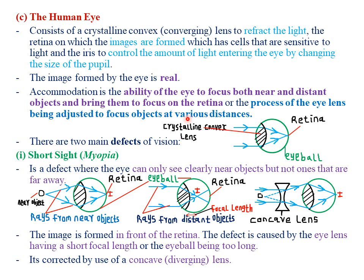There are two main defects of vision. The first defect is called short sight, or short-sightedness, also called myopia. A person suffering from short-sightedness is said to be myopic. Short-sightedness is a defect where the eye can only see clearly near objects but not ones that are far away. Objects closer to you, you'll be able to see clearly, but objects far away you won't be able to see. As shown in this diagram, rays from near objects are focused on the retina, so you see them clearly.